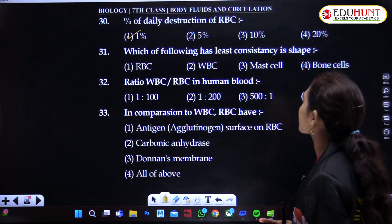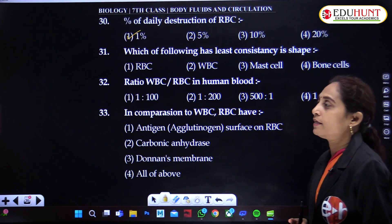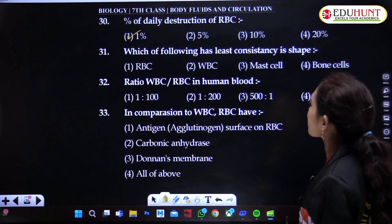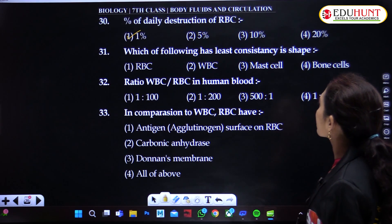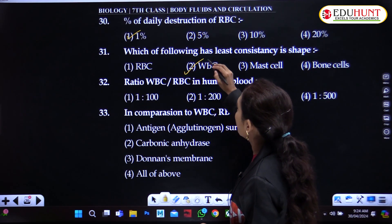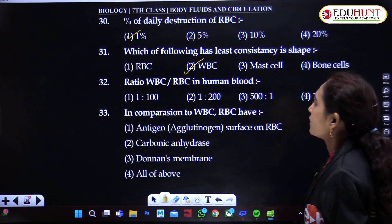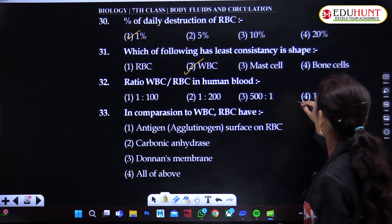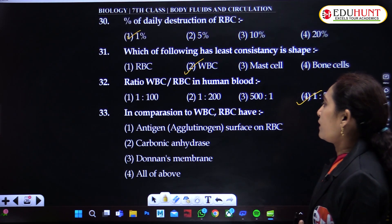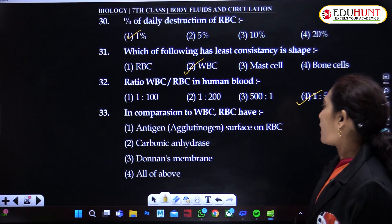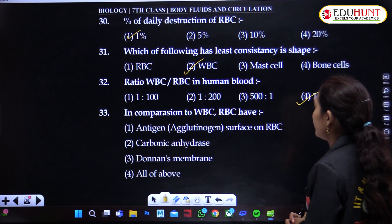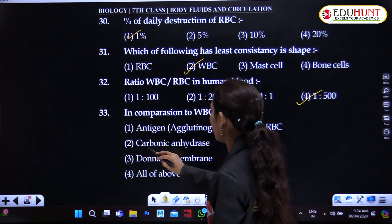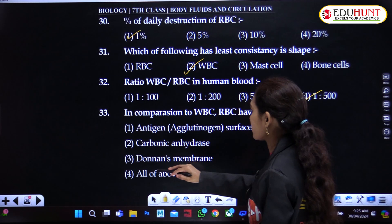Which of the following has the least consistency in shape — RBC, WBC, mast cells, or bone cells? WBC has the least consistency in shape. The ratio of WBC to RBC in human blood is 1 to 500. In comparison to WBC, RBC have antigens on their surface, carbonic anhydrase, and a donor's membrane — all these things are present on RBC.